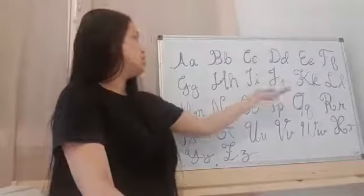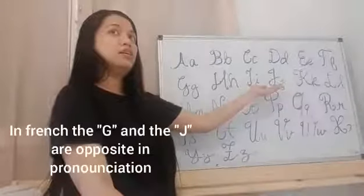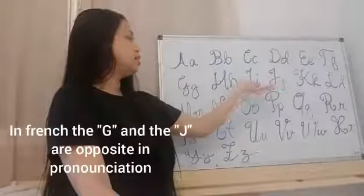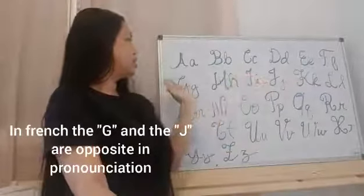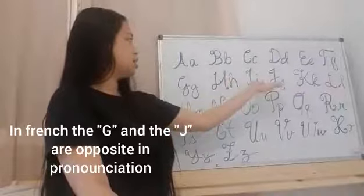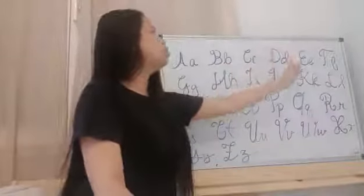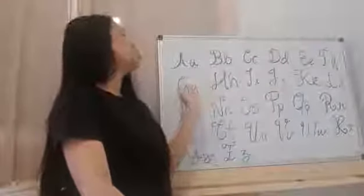Yeah, in French the J and the G are opposite. You pronounce G when it's G in French, and you pronounce G when it's J in French. A, B, C, D, E, F, G...